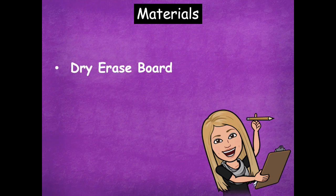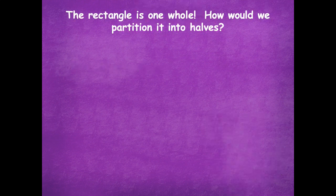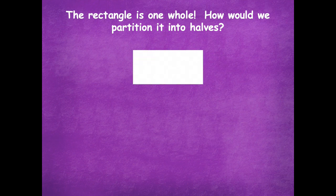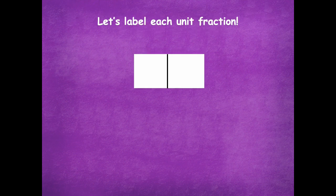The materials that you'll need for this lesson are just your dry erase board, so make sure you grab that before you get started. All right friends, the rectangle is one whole. How would we partition it into halves? Just draw a line right down the middle. So let's label each unit fraction — my first half of my rectangle is one half, and the other is also one half.